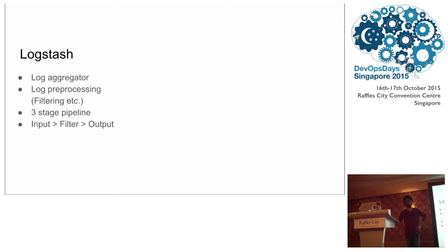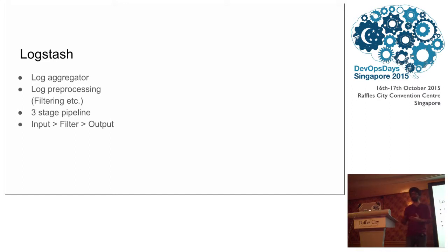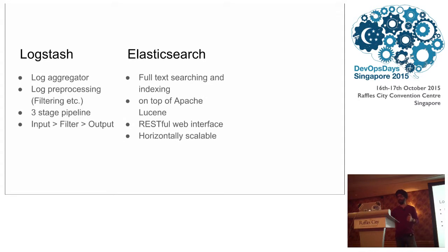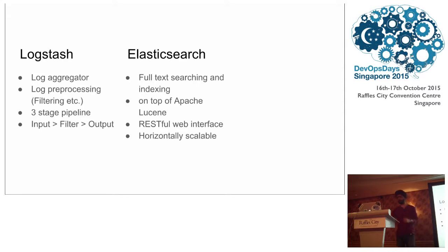Let's start with Logstash. Logstash is a log aggregator and log pre-processing pipeline. It consists of three stages: input, filter, and output. Elasticsearch is your full-text searching and indexing engine built on top of Apache Lucene. It has a RESTful web interface for querying your data, and it's horizontally scalable — you can add more servers to increase reliability as well as search speed.